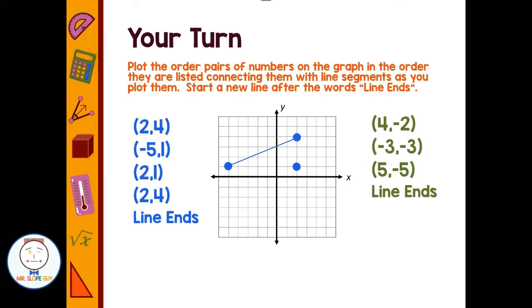And then we have (2, 4). Well (2, 4) brings me back to where I started. So if I put a point on top of that you're not really going to see it because it already has a point there. But I am going to go ahead and connect those because it gave me that point, meaning I'm connecting all the way back to where I started. And that's where my line ends.